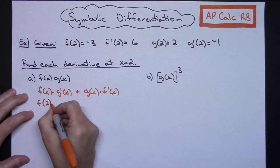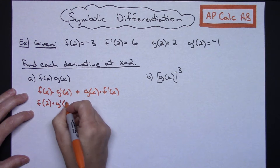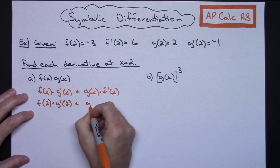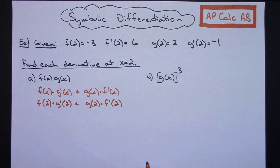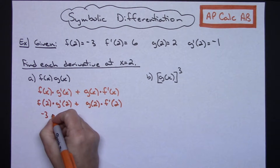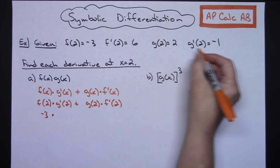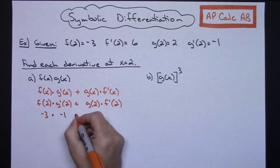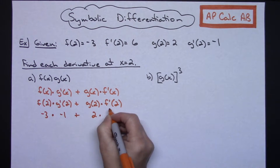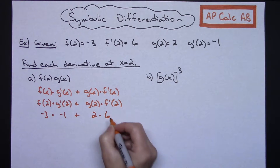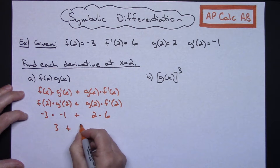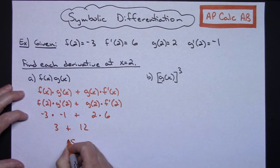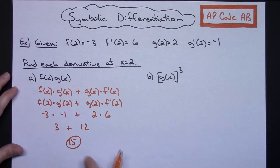So it's f(2) times g'(2) plus g(2) times f'(2). Each one of those values has been given: f(2) is negative 3, times g'(2) which is negative 1, plus g(2) which is 2, times f'(2) which is 6. It's a matter of just doing some arithmetic — this is going to be 3 plus 12, which gives me the overall derivative at x equals 2 being 15.